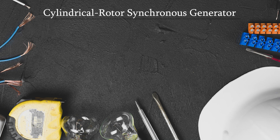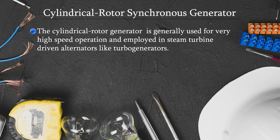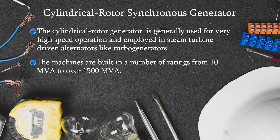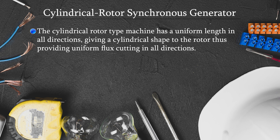Cylindrical rotor synchronous generator: this type is normally used for very high speed operation in steam turbine driven alternators, called turbo generators. Machines are built in different ratings, starting from 10 MVA up to 1500 MVA. The cylindrical rotor type has a uniform length in all directions, giving a cylindrical shape to the rotor and providing uniform flux cutting in all directions.